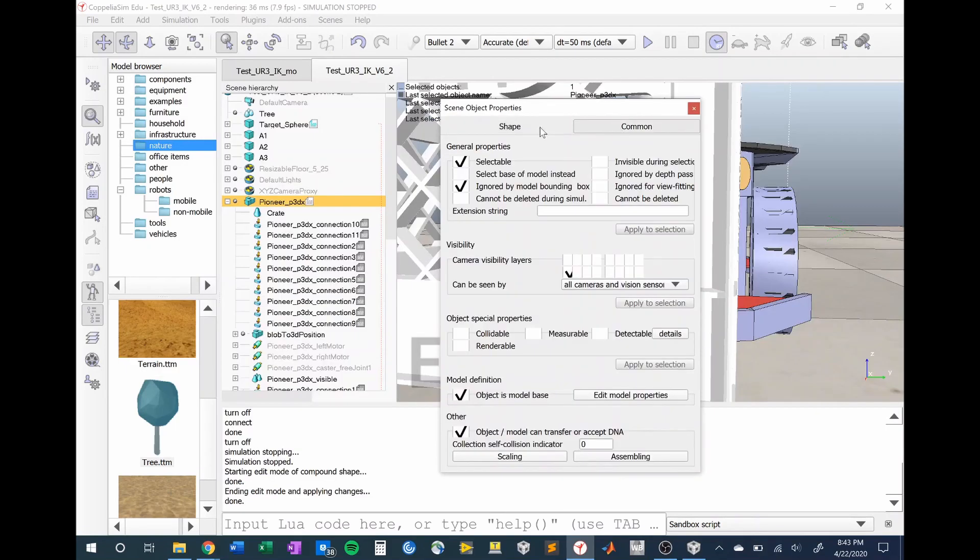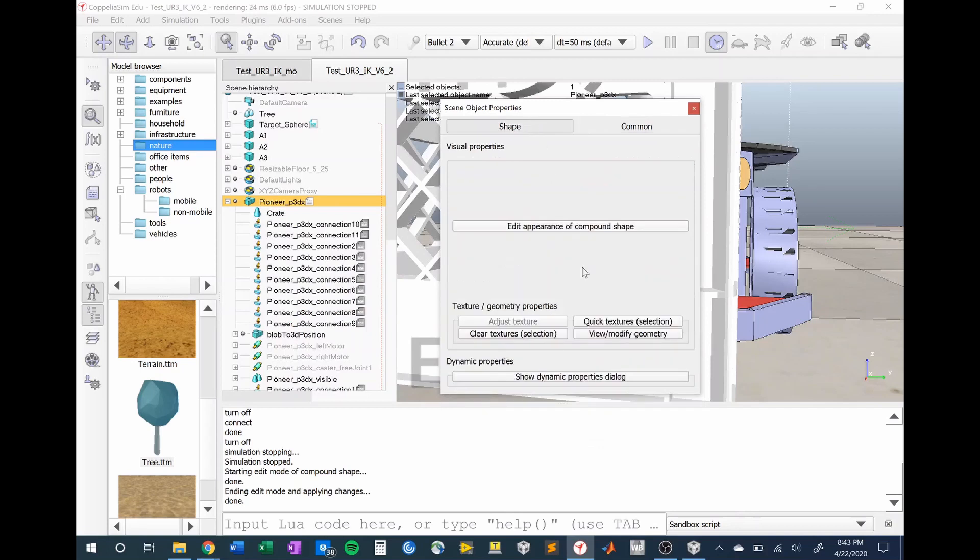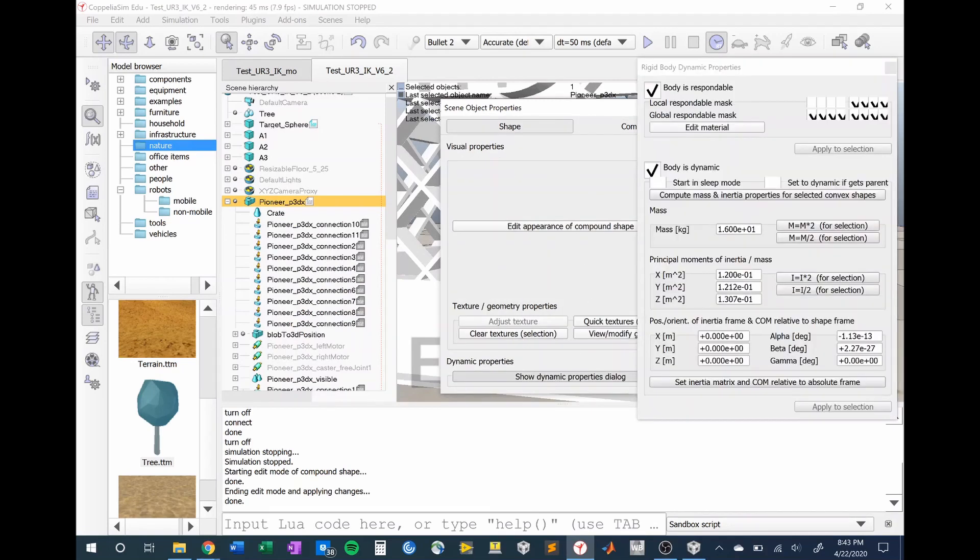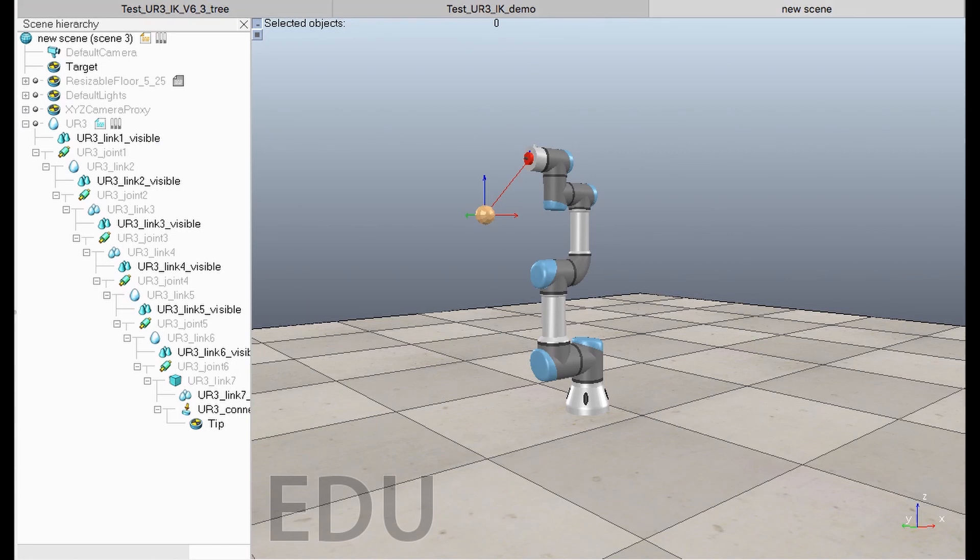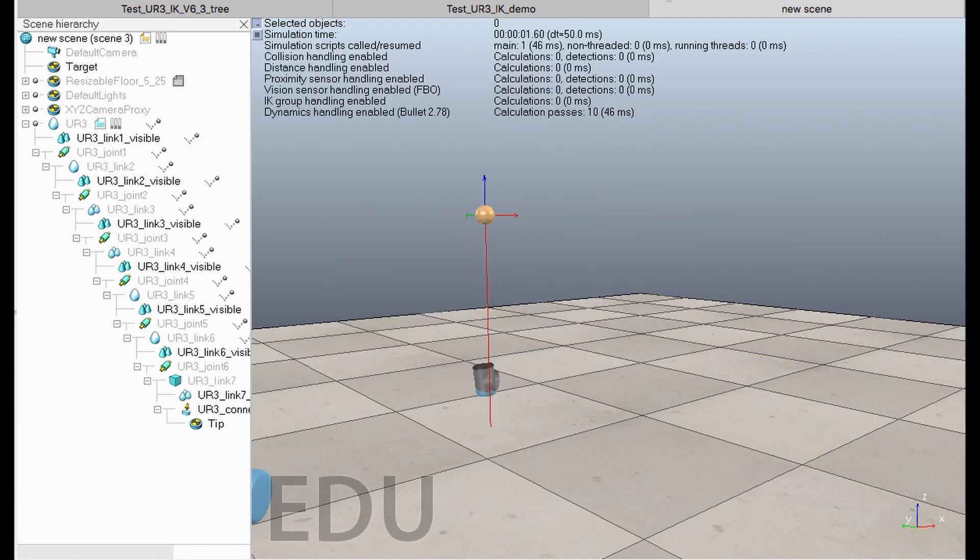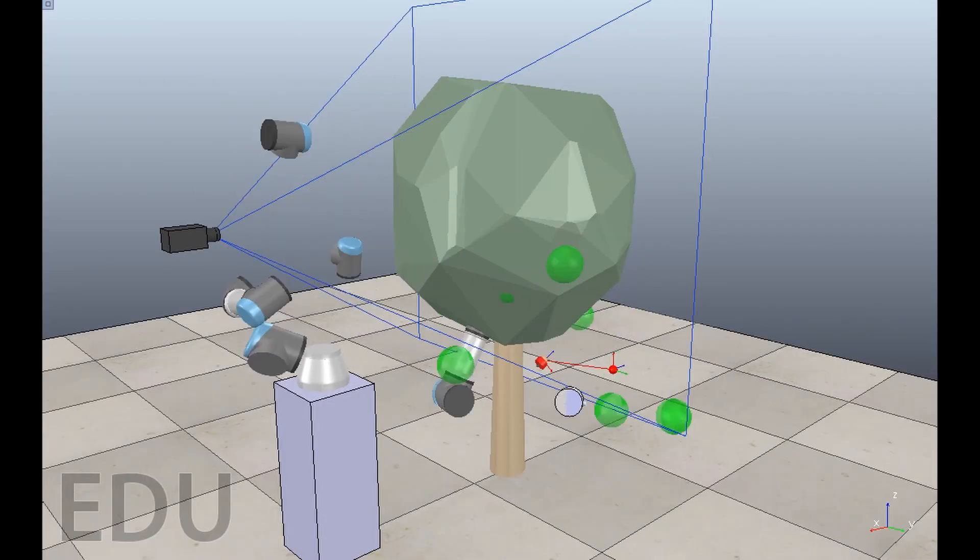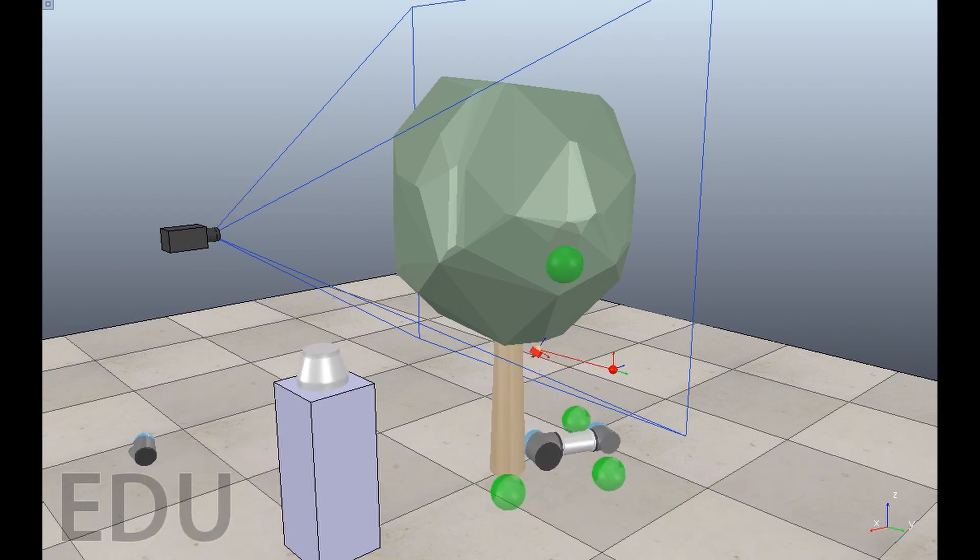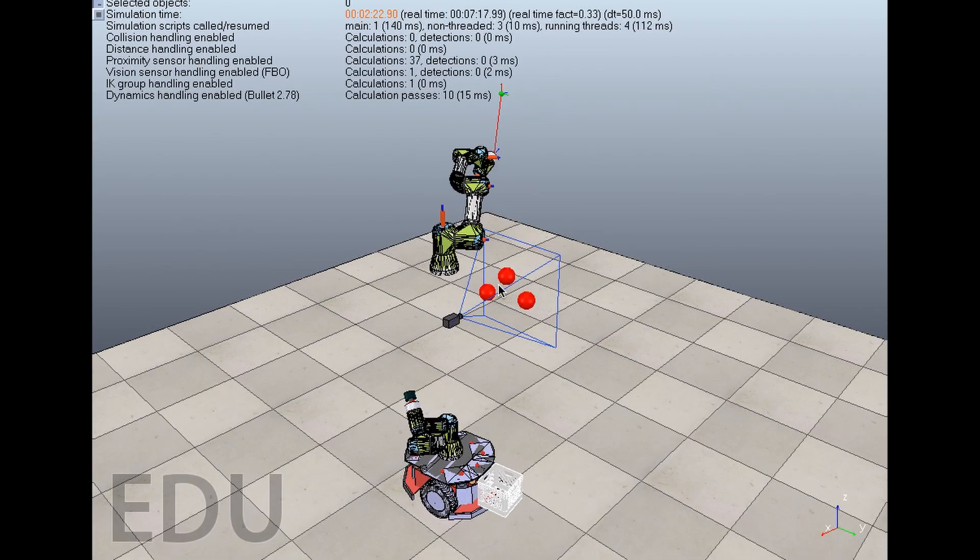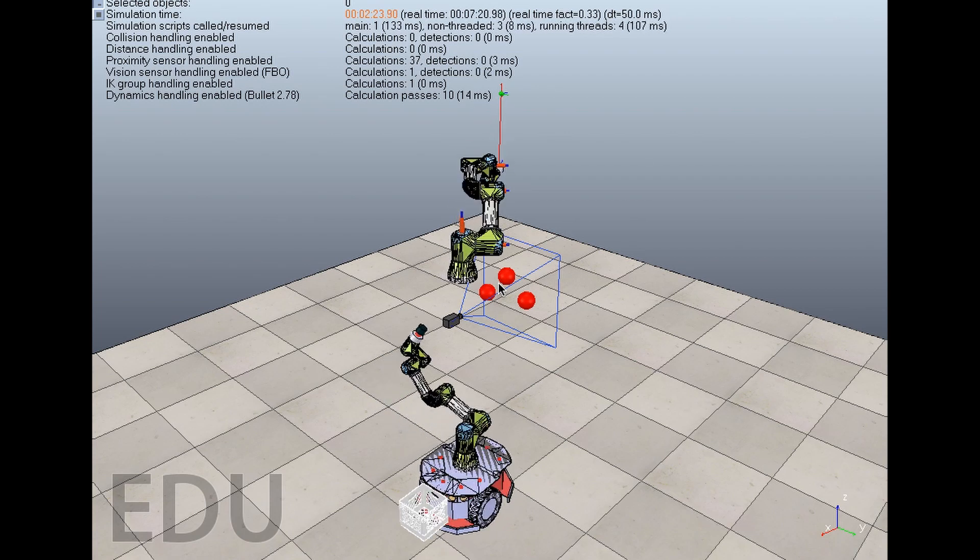Some other problems that we experienced include, but are not limited to, dealing with different types of dynamic properties, robot parts disconnecting and flying all over the place, and plain old weird CoppeliaSim behaviors.